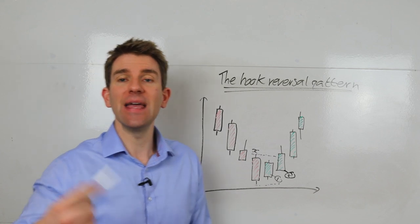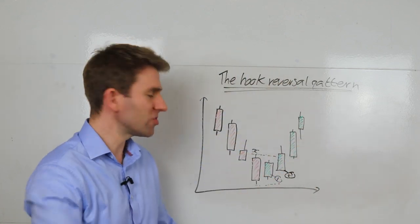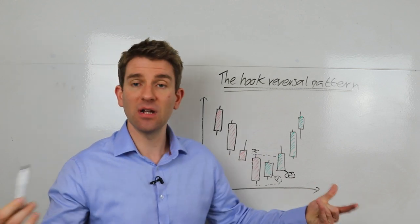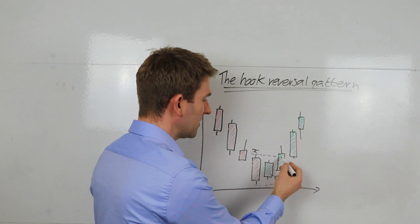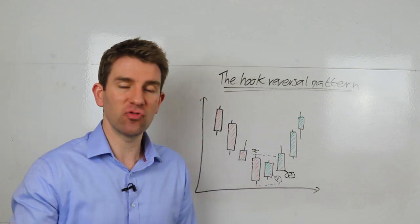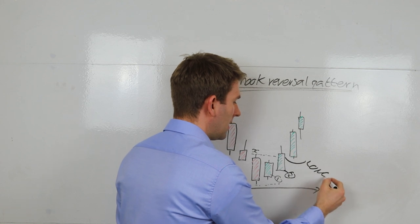We're still basing the trade entry on the last red candle in the downtrend move. If we were trading this hook reversal from the other way, from the short side, then candle X would obviously be the last green candle. So now as we break through that high, this level here, that's our entry point.